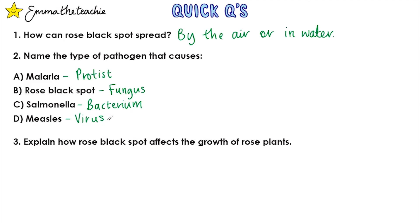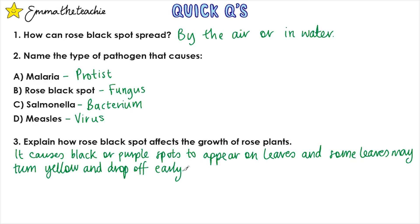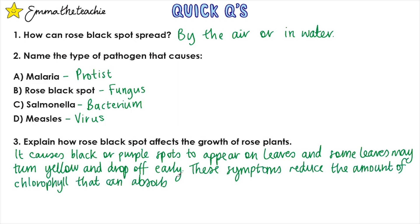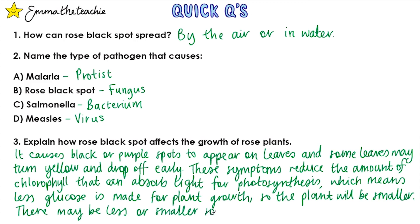Question 3: Explain how rose black spot affects the growth of rose plants. Start by explaining the symptoms: it causes black or purple spots to appear on leaves, and some leaves may turn yellow and drop off early. These symptoms reduce the amount of chlorophyll that can absorb light for photosynthesis, which means less glucose is made for plant growth, so the plants will be smaller and there may be fewer or smaller numbers of roses. Don't worry if you didn't get all the detail about the chlorophyll, as that's going to be covered more in the bioenergetics topic next.